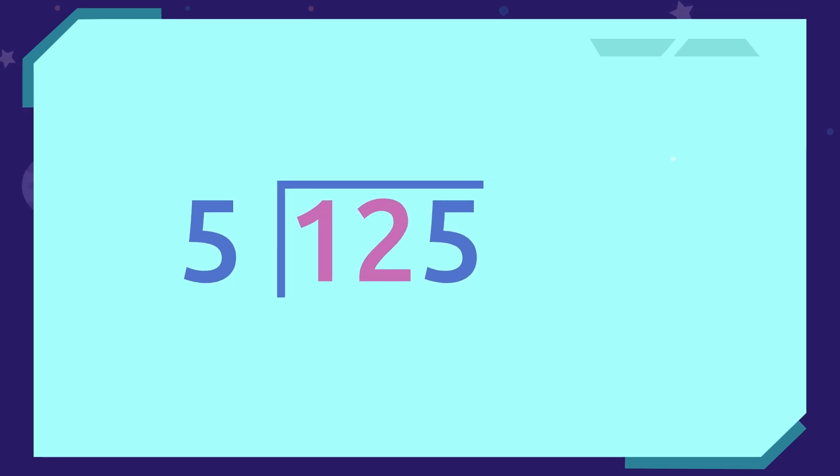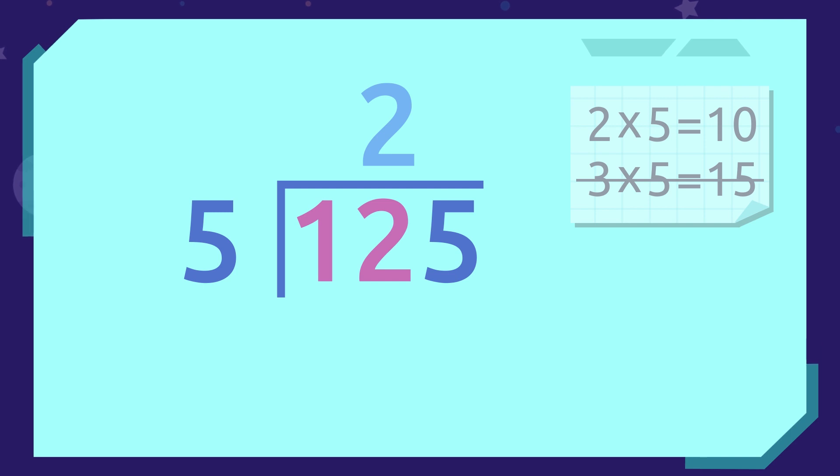Now, we have to mentally calculate which number multiplied by the divisor is closest to the dividend. Which number multiplied by 5 gives us 12 or less? 2! Indeed! 2 times 5 equals 10. We cannot use 3 because if we multiply it by 5, it gives us 15, which is bigger than the dividend. And if we use 1, it is too small and there is another one that is closer.